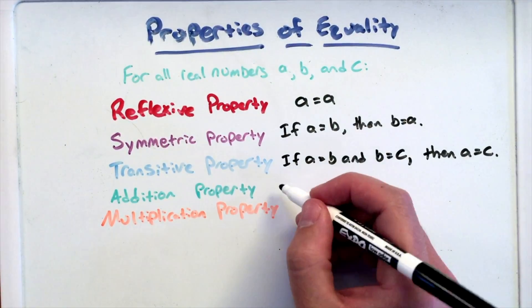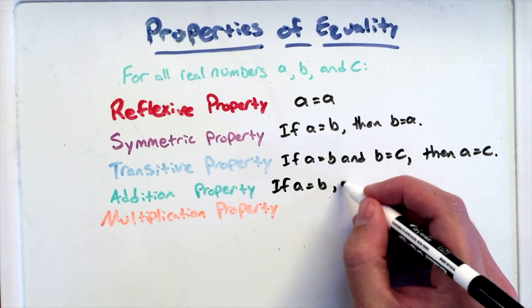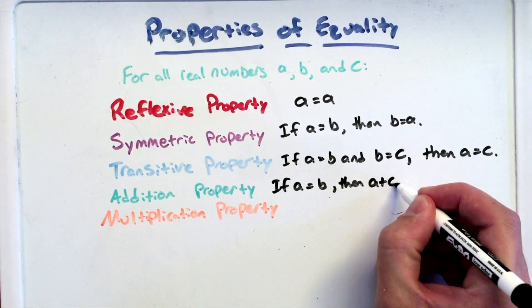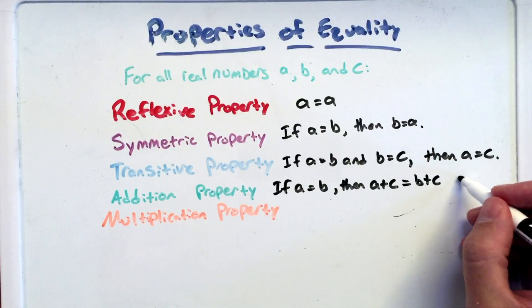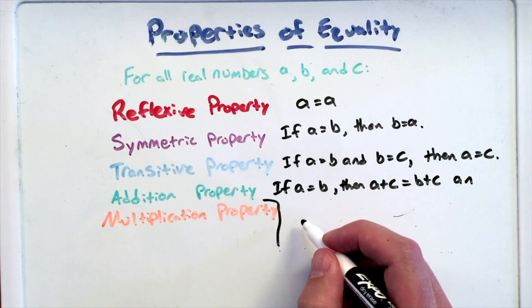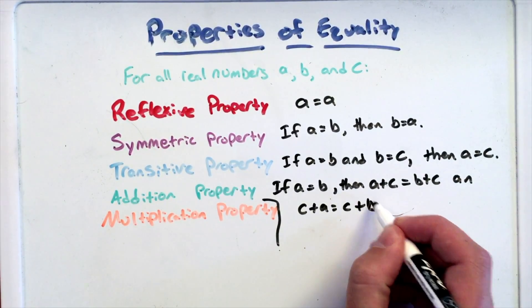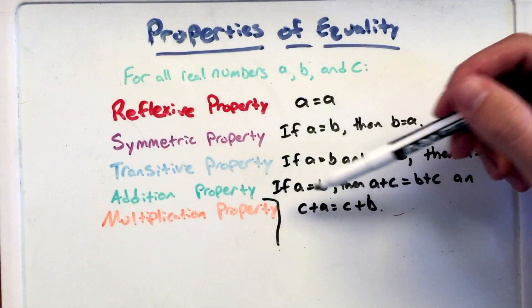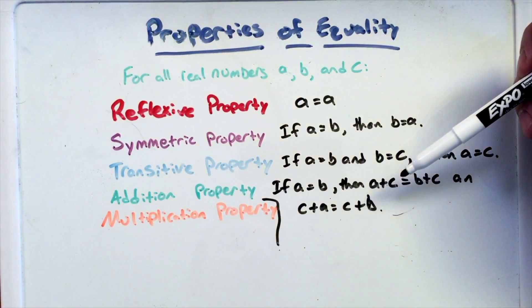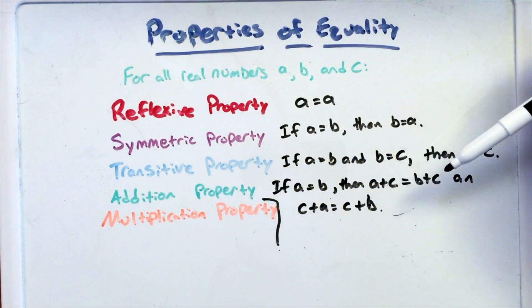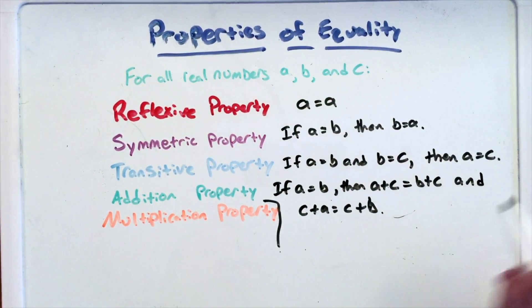The addition property: if A equals B, then A plus C equals B plus C. And breaking it down like this, C plus A equals C plus B. So let's take this for a second. If A equals B, so if A and B are equal to each other, then we can add a common C to both sides and still say that they're equal, again C being a real number.